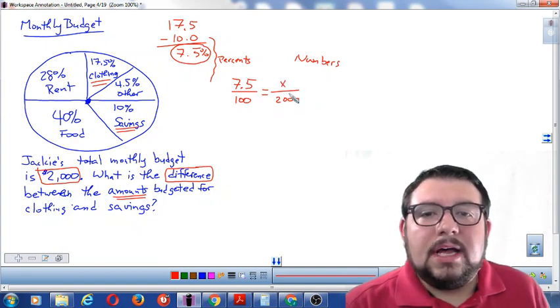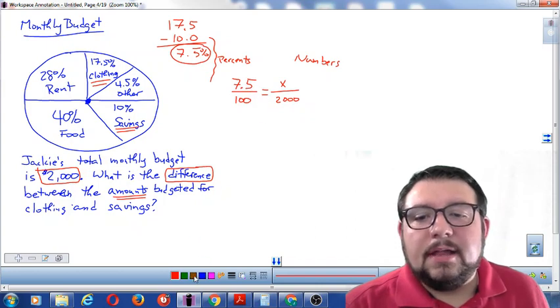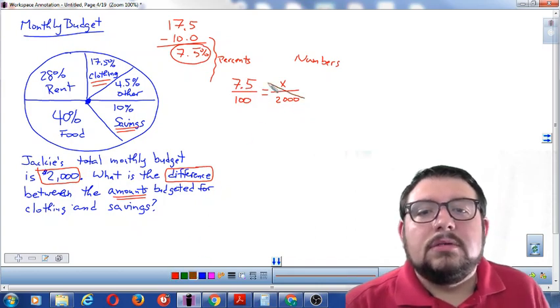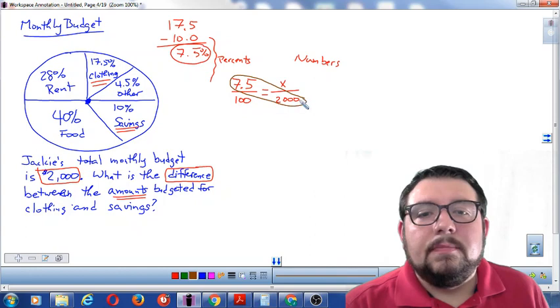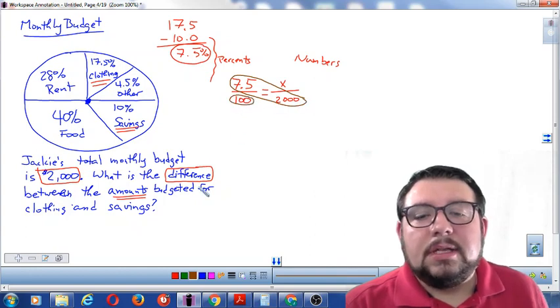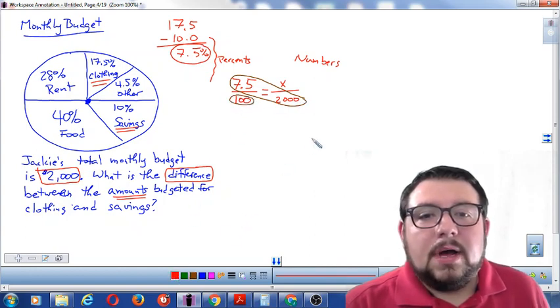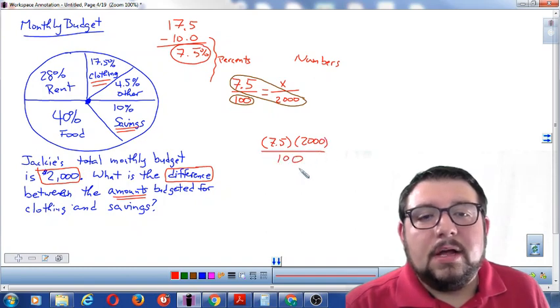To solve this we're going to cross multiply and divide. So we're going to cross multiply here and we're going to divide by a hundred at the end. So I'm going to set that up: we're going to do 7.5 times two thousand, and on the bottom we're going to divide by a hundred.